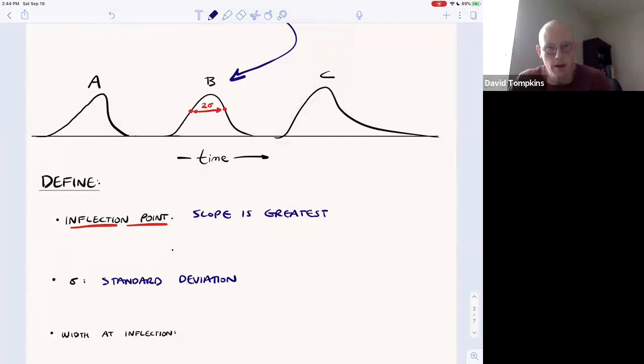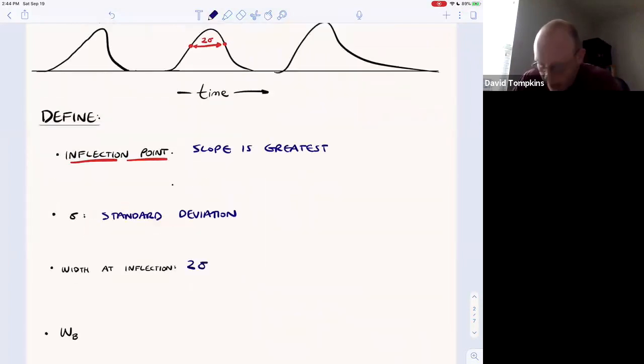So the standard deviation is related to some other mathematical parameters that we'll need for problem solving. So if you think about the width at that inflection point, and we go slightly below that width to about right here. So now if you go across the peak, it's a little bit greater, it's actually 2.35 times sigma. And this is half the height of the peak.